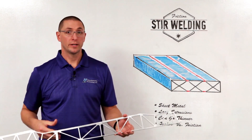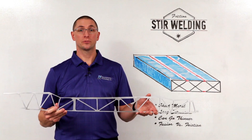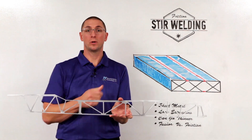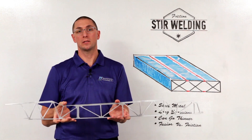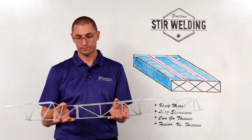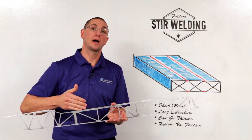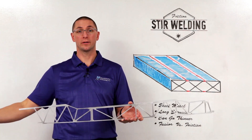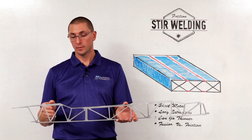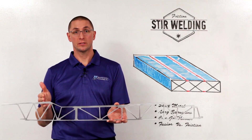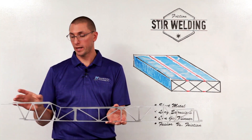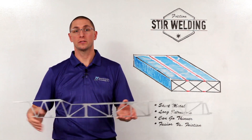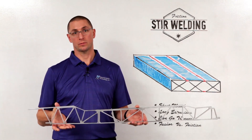Friction stir welding is also very helpful for welding extrusions. These are three separate hollow extrusions welded along these seams. This extrusion can also be very long and very wide. It's cost effective to weld these separate extrusions together because smaller extrusions are much less expensive than really wide extrusions.